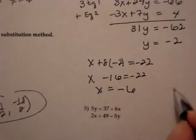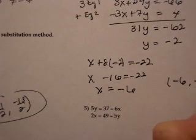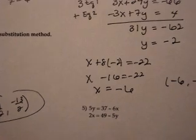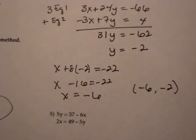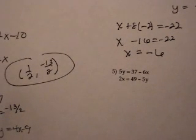So the ordered pair would be negative 6, negative 2. It helps if you can see that. Let's do one more. Number 5.